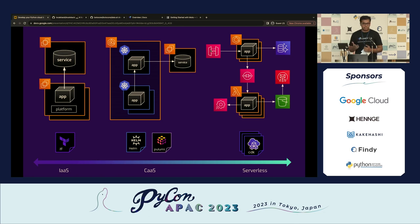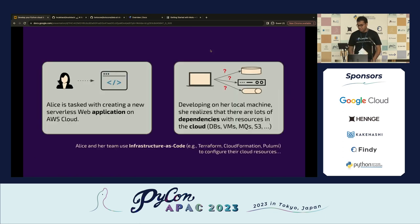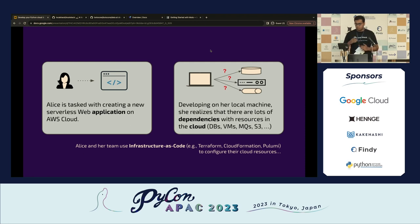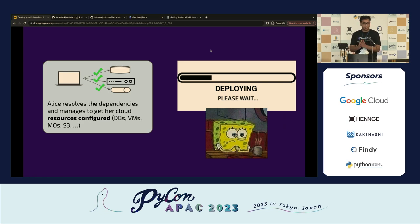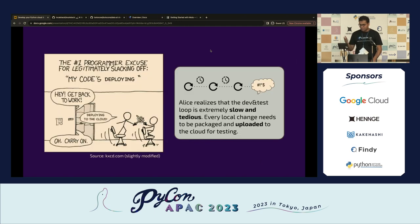Serverless development is pretty controversial, but let's talk about the current scenario. I've taken the user persona of Alice. Alice has been tasked with creating a new serverless web application on AWS. Depending entirely on her local machine, she realizes there are a lot of dependencies she has no control over — databases, message queues, S3 buckets. She tries to resolve these by setting up real resources on the cloud for testing.